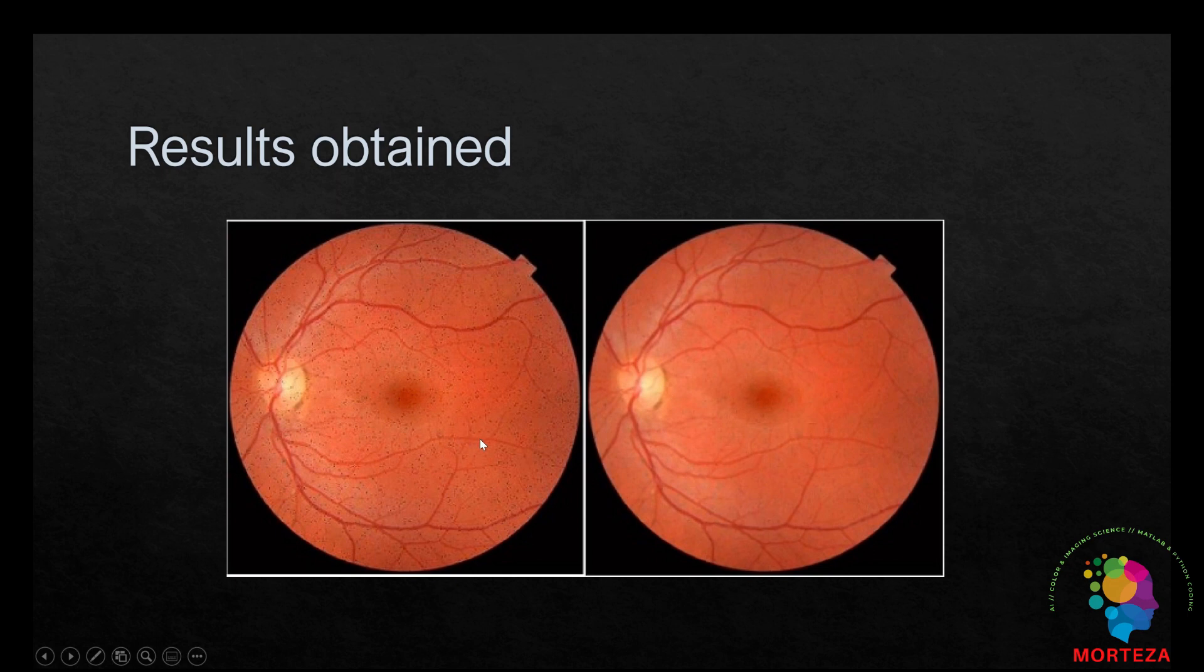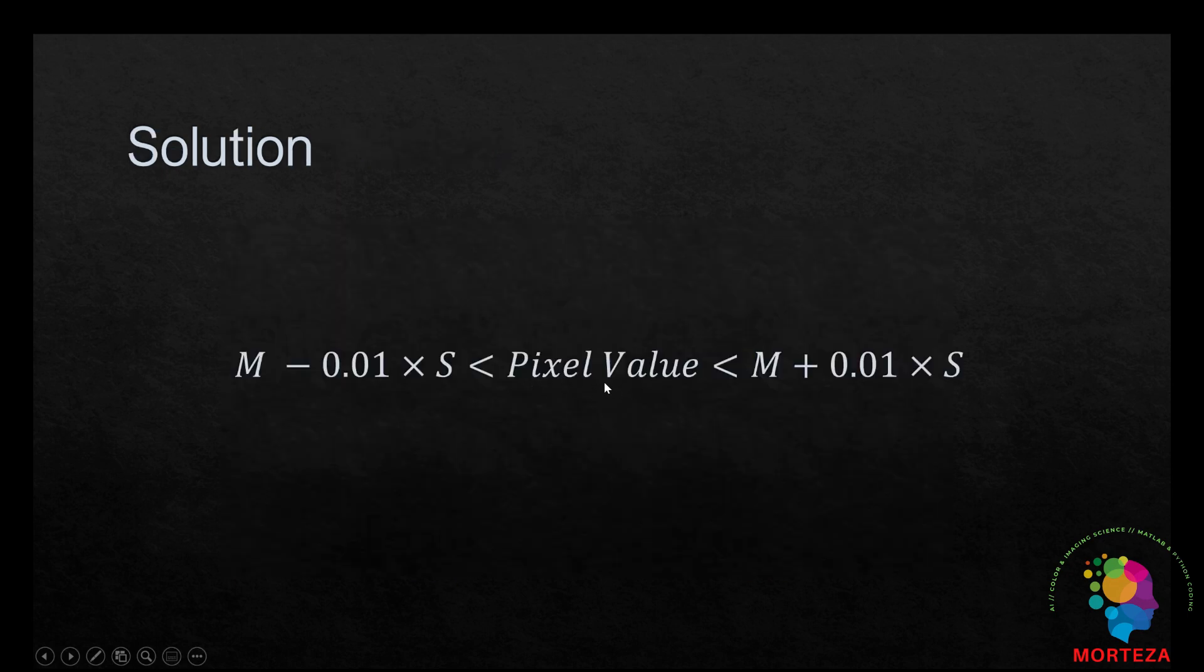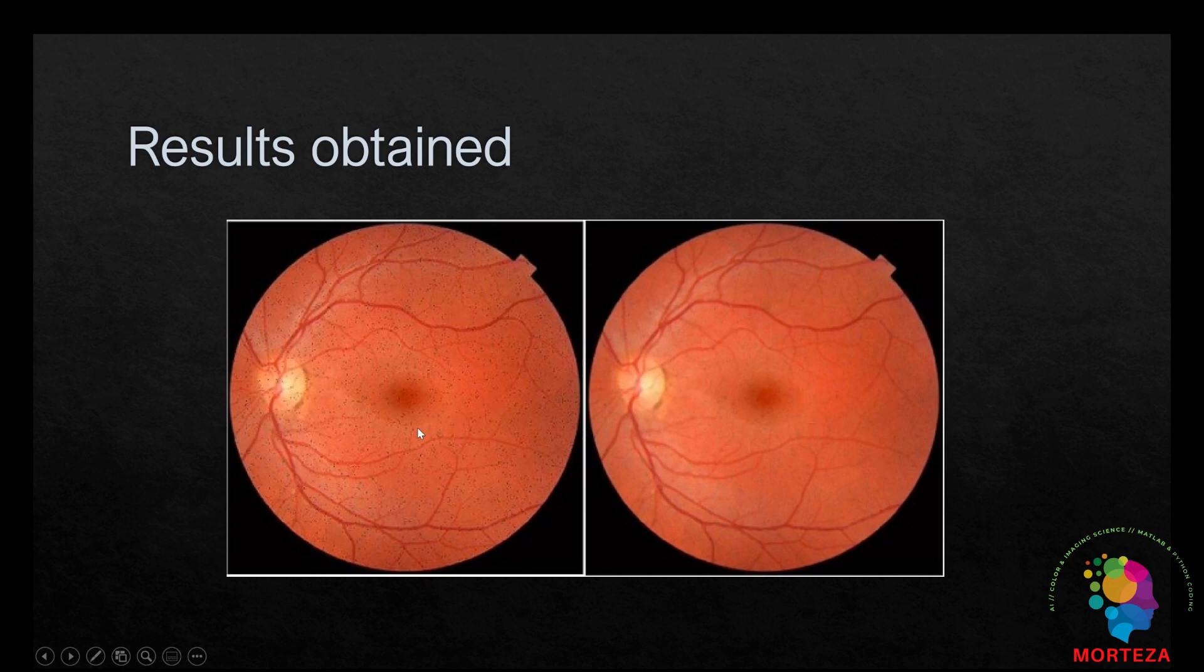If you apply the median filter without this condition here, you would not be able to get it as sharp image as you can see here. As you can see, the image has been denoised and the sharpness has been maintained as much as possible.